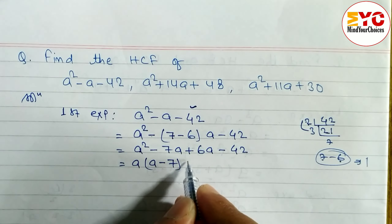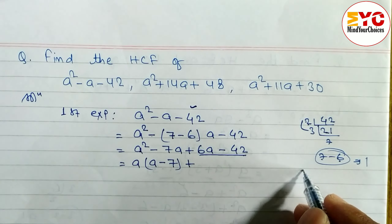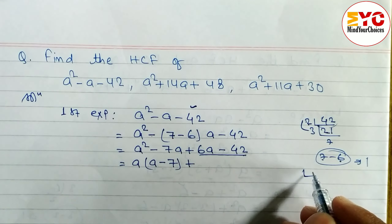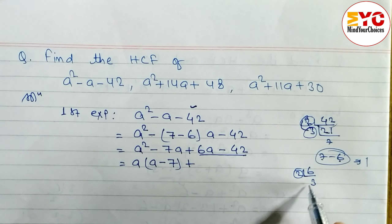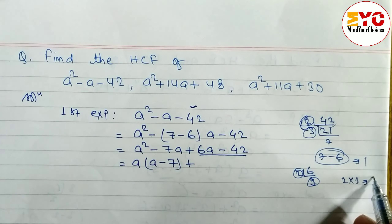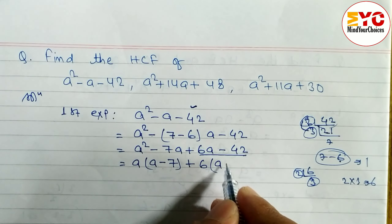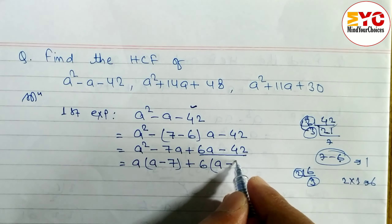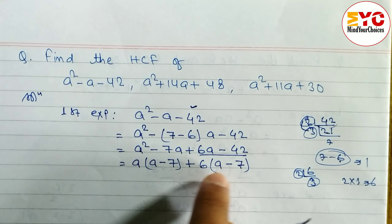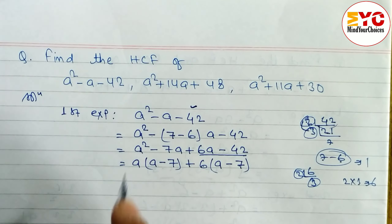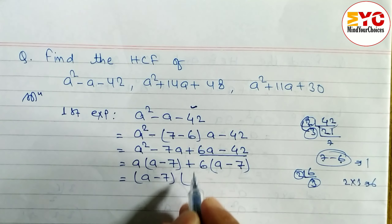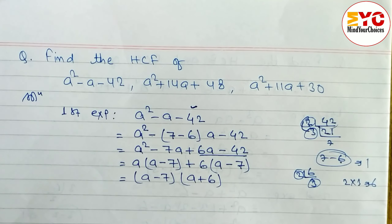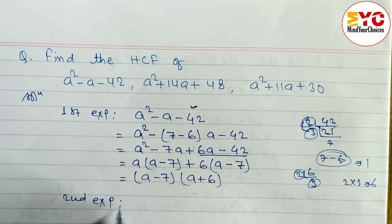Common from the first two terms is a, giving a(a minus 7). For the last two terms, 6 is common: 6(a minus 7). Since both brackets are the same, we take (a minus 7) as common, giving (a minus 7)(a plus 6). That completes the factorization of the first expression.